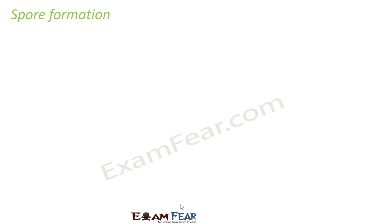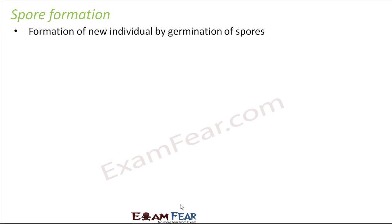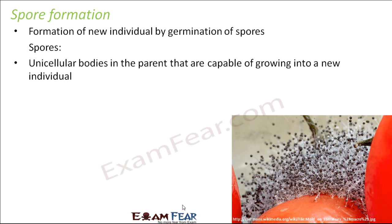The next mode is spore formation — the formation of a new individual by germination of spores. Spores are actually unicellular bodies in the parent that are capable of growing into a new individual. Unicellular means anything made up of a single cell. These are special cells in the body of the parent, and they have the capacity to form entire new organisms.